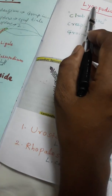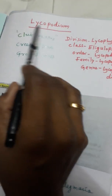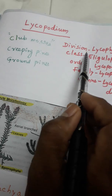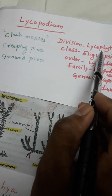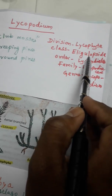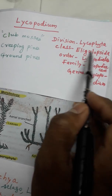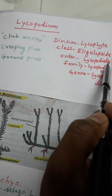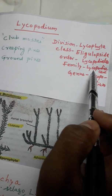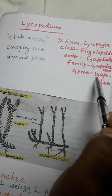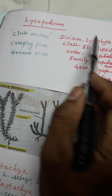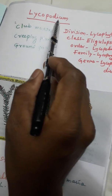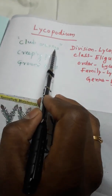Now, discussion about Lycopodium. The systematic position: Division Lycophyta, Class Eligulopsida (meaning there is no ligule), Order Lycopodiales, Family Lycopodiaceae, Genus Lycopodium. Generally, Lycopodium is called club mosses, creeping pines, or ground pines.